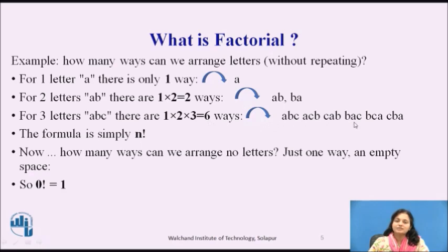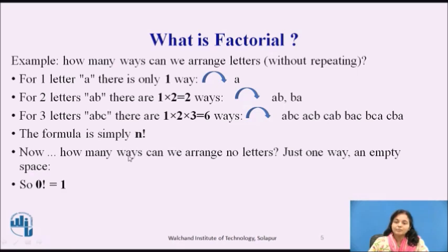The 6 possibilities shown are: A B C, A C B, C A B, B A C, B C A, C B A — the placement of every character is changed in each case. So if we know the factorial, we can find all the possibilities of how those particular characters can be arranged. If nothing is there, there is only one possibility — nothing can be placed or replaced.